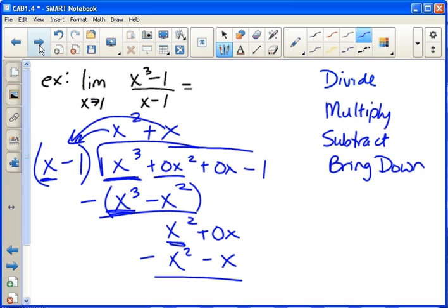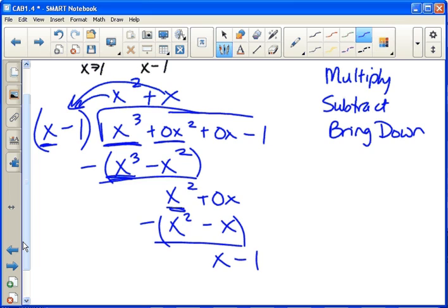Make sure you subtract the whole thing. x squared minus x is zero. Zero minus negative x is x. And then bring down. Now we divide again. x divided by x is one. One times x minus one is x minus one. And it's perfect. We end up with no remainder.